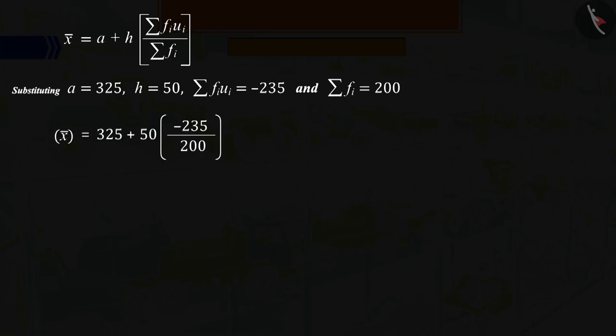In the above formula, by substituting the values of the assumed mean A, class size H, summation FI UI and summation FI, and solving, we get X equals 266.25.